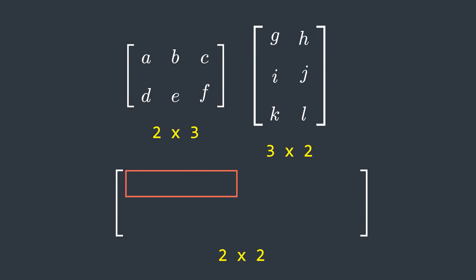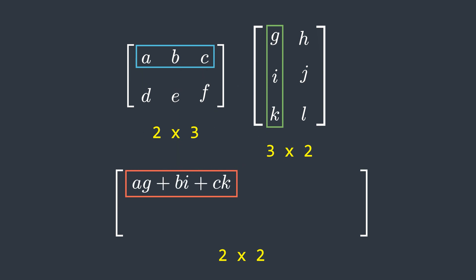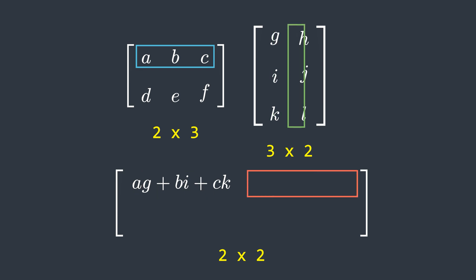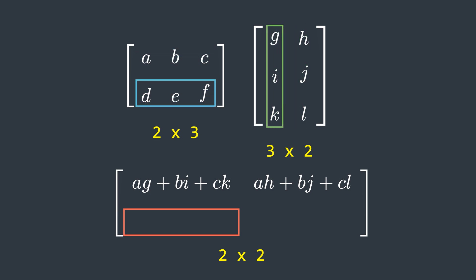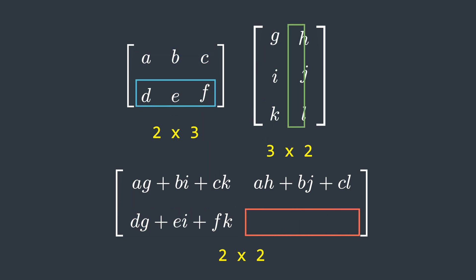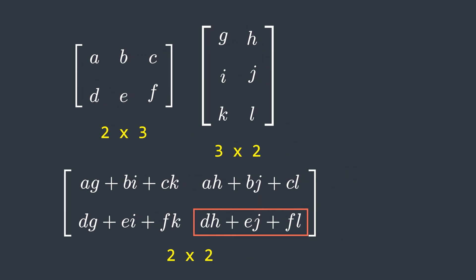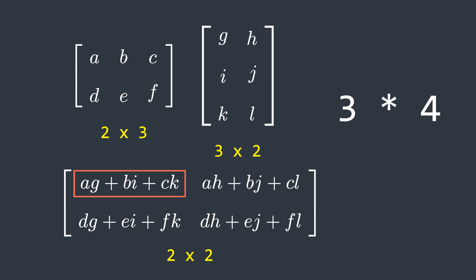To get the first element of the first row, we multiply each element of the first row of the first matrix by the corresponding elements of the first column of the second matrix, then add them all up. Similarly, to get the other elements, we follow the same process. To calculate each element we need to perform three multiplications, and since there are four elements in the resultant matrix, the total number of multiplications required is 12.